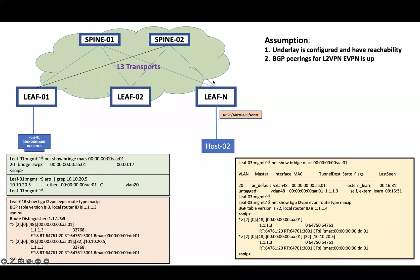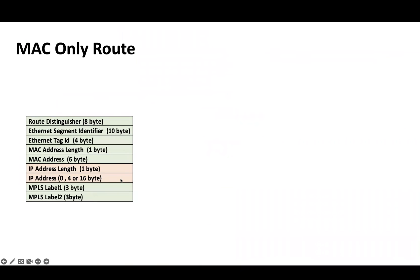Now let's have a look at a packet capture. As mentioned, the IP address is an optional field in type 2 route, so we have two scenarios: one when the IP address is not available, which is a MAC-only route, and one when it is included.